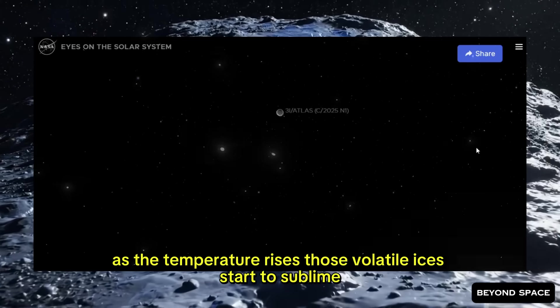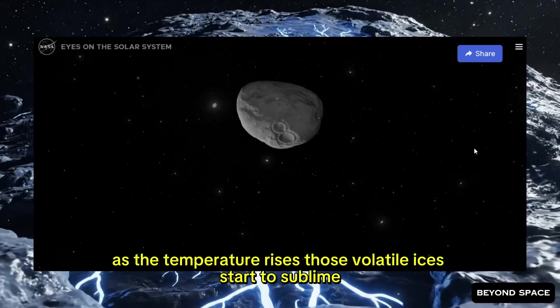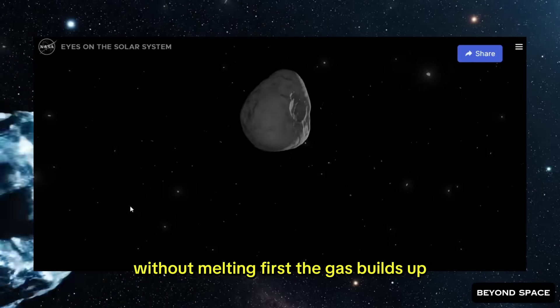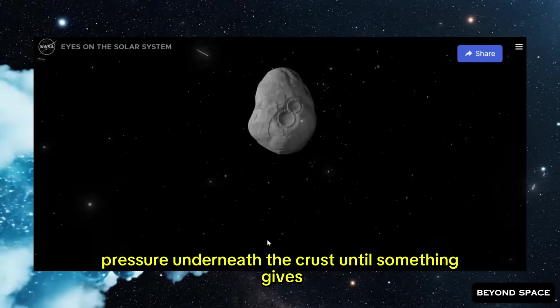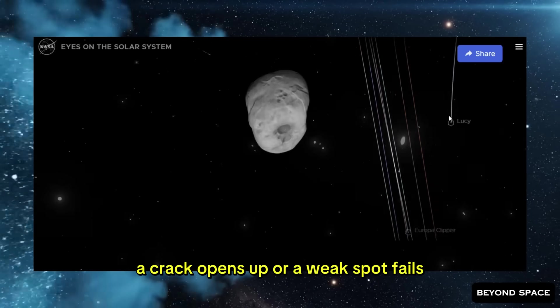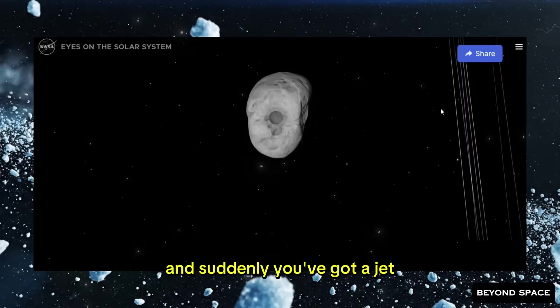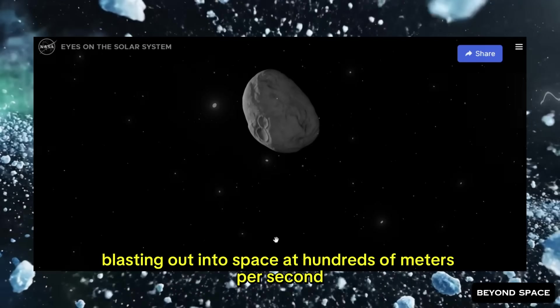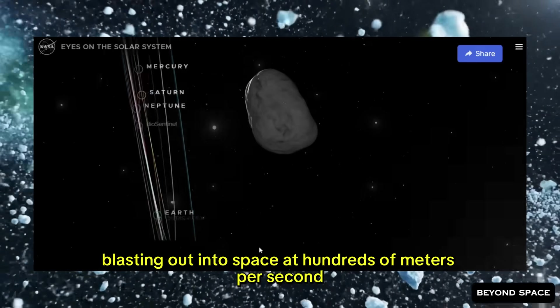And the crust doesn't conduct heat very well, so the energy takes time to soak down into the deeper layers. As the temperature rises, those volatile ices start to sublimate, turning directly from solid to gas without melting first. The gas builds up pressure underneath the crust until something gives. A crack opens up, or a weak spot fails, and suddenly you've got a jet, high-pressure gas and entrained dust blasting out into space at hundreds of meters per second.